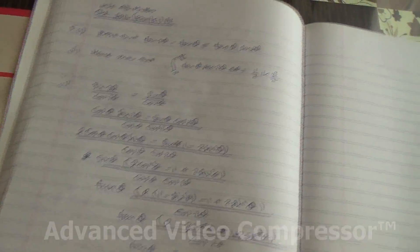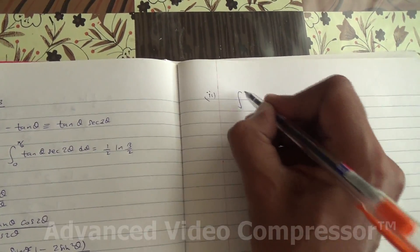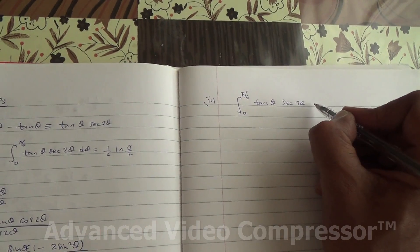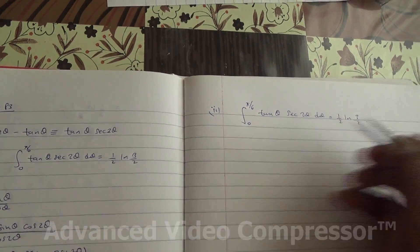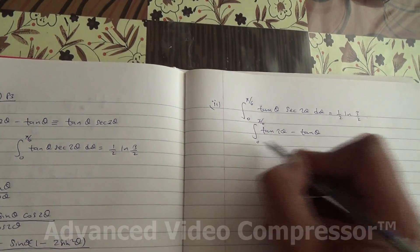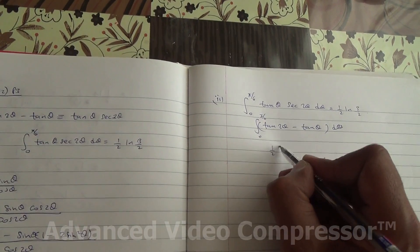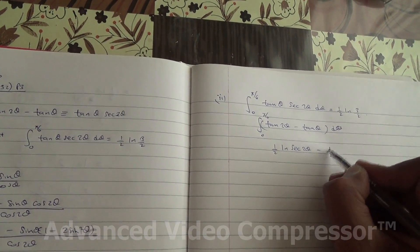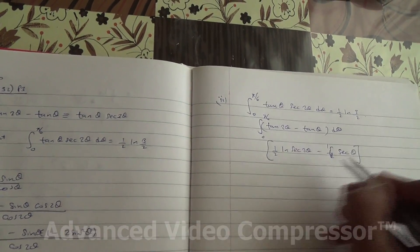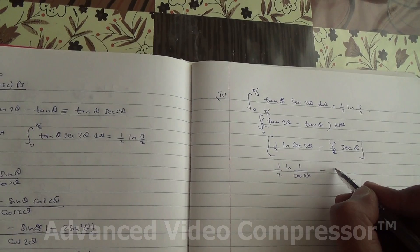For the second part, we need to show that the integral with limits from 0 to π/6 of tan(θ)sec(2θ) equals ½ ln(3/2). This is tan(2θ) minus tan(θ), as given in the question. Integrating: tan(2θ) gives ½ ln|sec(2θ)|, and tan(θ) gives ln|sec(θ)|. So we have ½ ln(1/cos(2θ)) minus ln(1/cos(θ)).